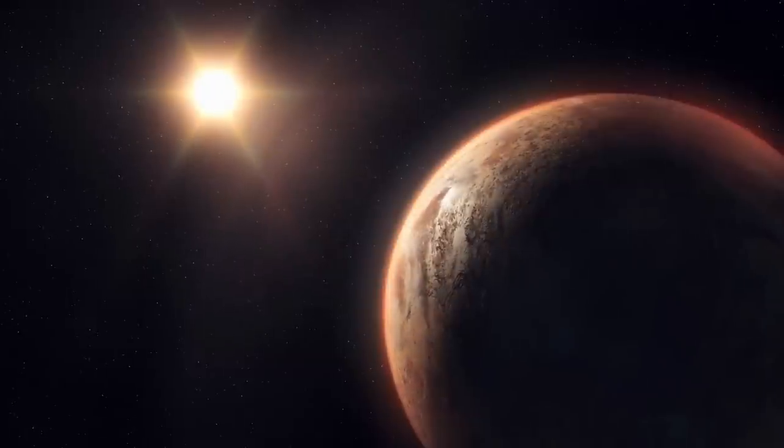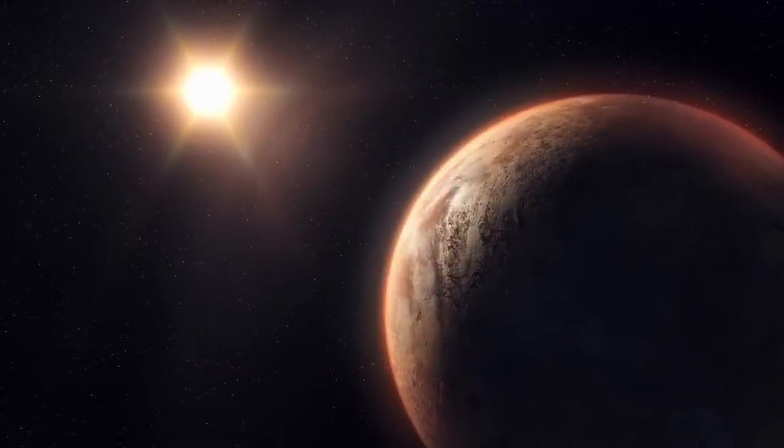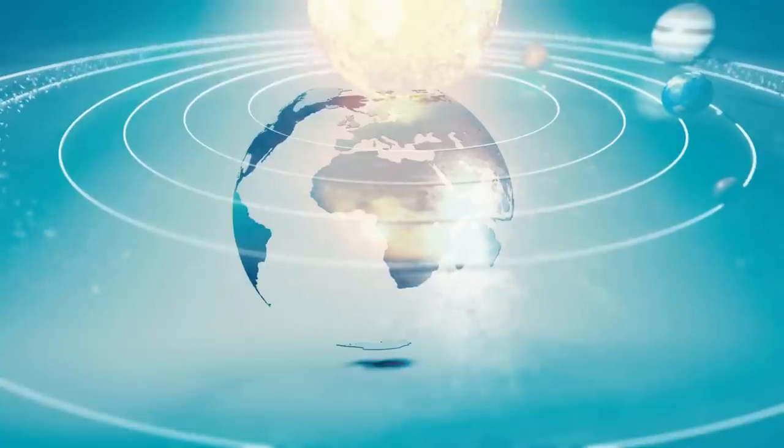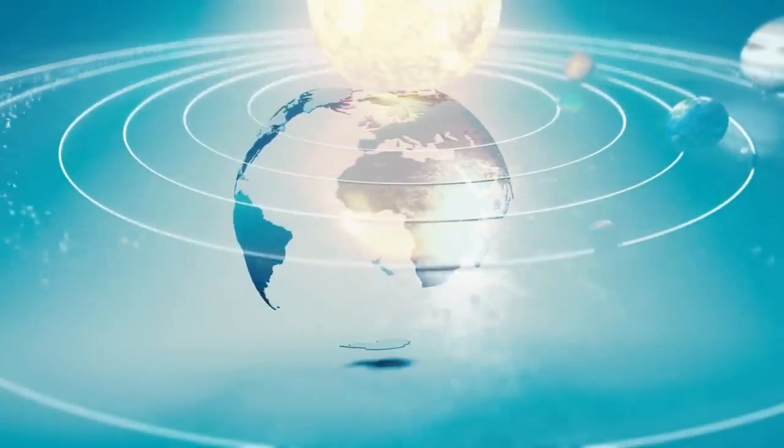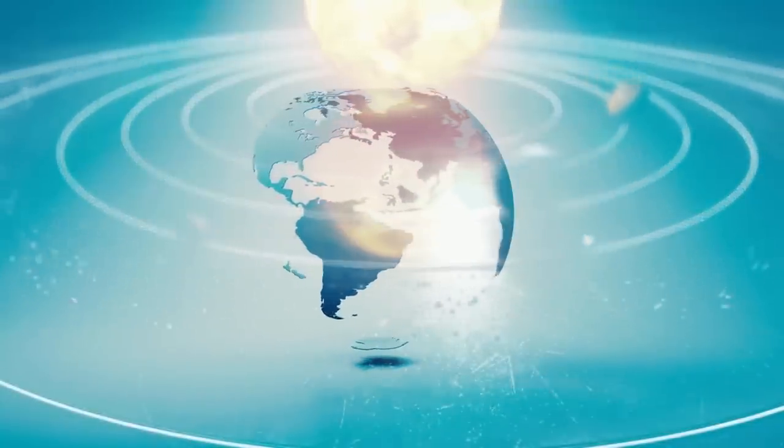Furthermore, scientists believe that 55 Cancri might have more planets, potentially including rocky ones, that are currently beyond our detection capabilities. A noteworthy similarity is that all these planets in both systems exhibit nearly circular orbits around their respective stars.